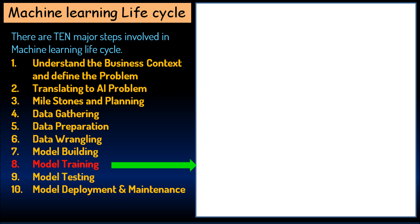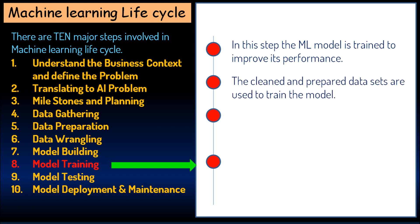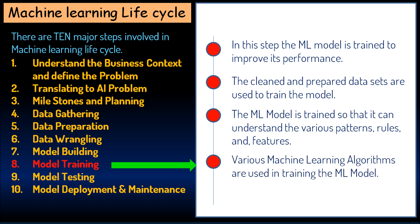The eighth step is model training. In this step, the ML model is trained to improve its performance. The cleaned and prepared data sets are used to train the model. The ML model is trained so that it can understand the various patterns, rules, and features. Various ML algorithms are used in training the ML model.